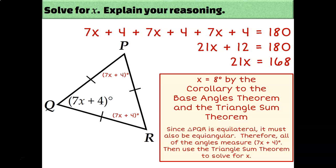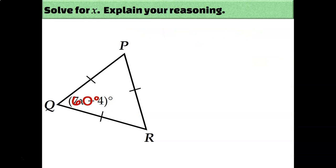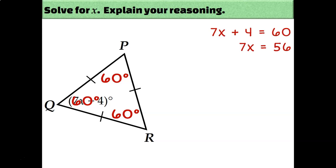We also know that equilateral (equiangular) triangles always have angle measures of 60°, since 180 ÷ 3 = 60. So alternatively, you could set 7x + 4 = 60, then subtract 4 and divide by 7, and still get x = 8.